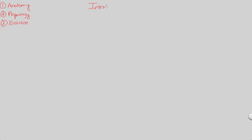In order to understand homeostasis, I think it's important to begin our look at this process through an introductory flowchart. So what is homeostasis? Let's hash out this definition at the very beginning. I want to break down the word. Homeostasis is going to literally translate into 'steady state' — that's what it literally means from those two roots. But I want to break this down a little bit further. The steady state achieved through homeostasis is actually going to involve a couple of key factors.